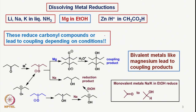These reducing systems allow reductions of many carbonyl compounds, or sometimes they also lead to coupling of two molecules depending on conditions. It is a very useful reducing system, and both reduction and coupling lead to important products. Monovalent metals such as sodium or potassium in ethanol reduce a carbonyl group to the corresponding alcohol, whereas bivalent metals like magnesium lead to coupling products. We would first like to see what exactly happens when a carbonyl compound is brought into contact with either a monovalent or a bivalent metal.